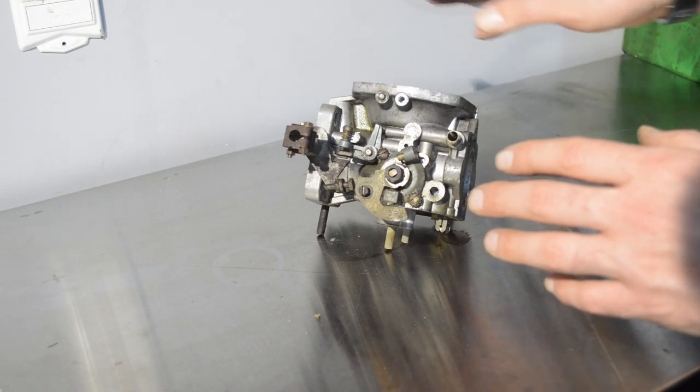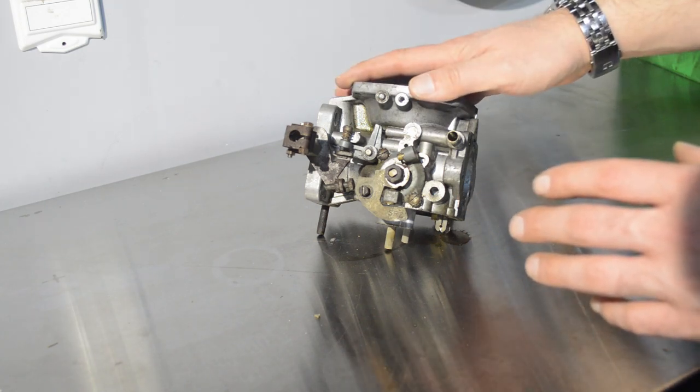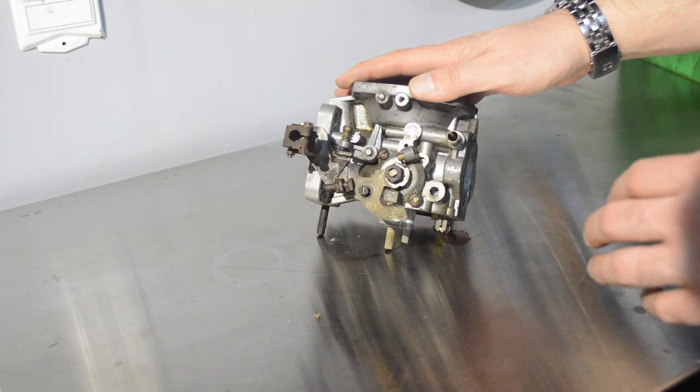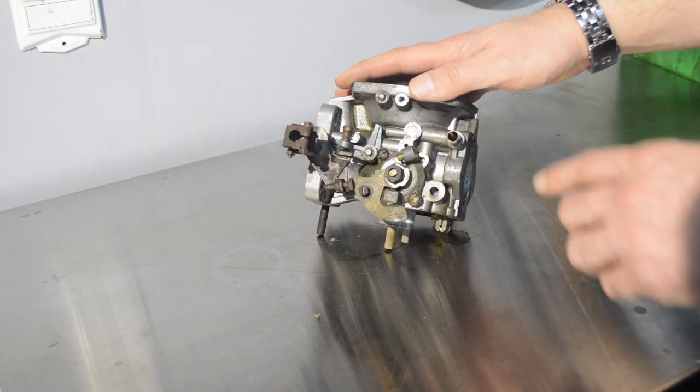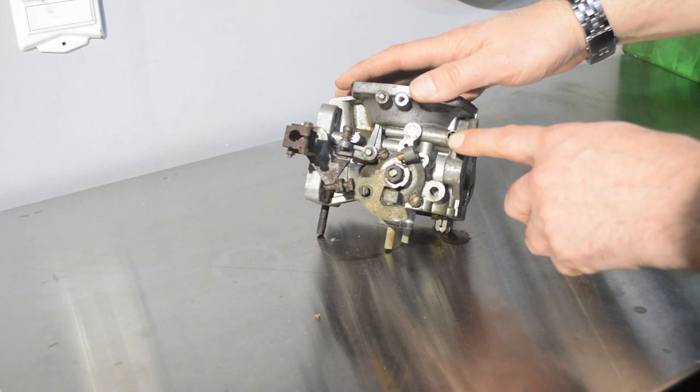If you have one with three ports, this is the style of Zenith Stromberg carburetor that's going to match it. I believe on Triumphs I started using those around 1973. So if you've got a 73 and later car, it's likely that you have this. It's going to have a port here on the side of the carburetor that's also going to go to one of the ports on that charcoal canister.